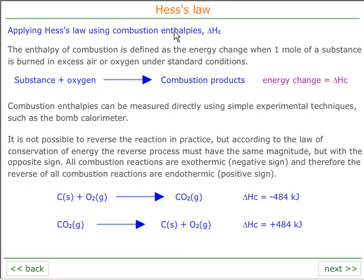So if we use combustion enthalpies, what we're saying is that when we burn something, we get combustion products, and we can call that delta Hc — enthalpy of combustion. The reason why combustion enthalpies are useful is because they can actually be measured; we can measure them using a calorimeter. The enthalpy of combustion is defined as the energy released when one mole of a substance, under standard conditions, is burnt in excess air or oxygen.